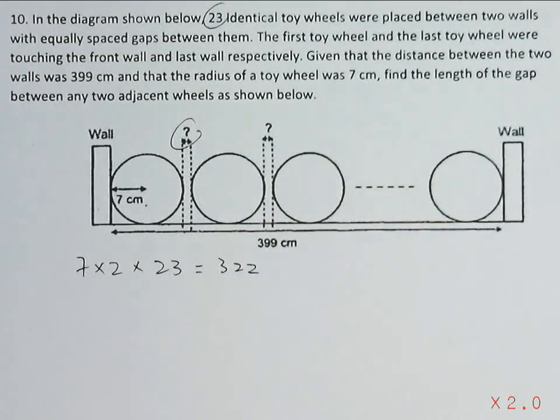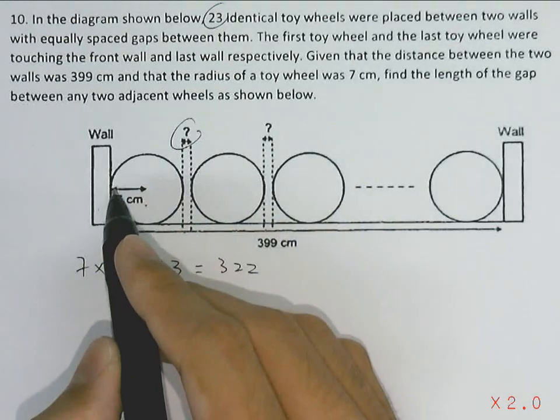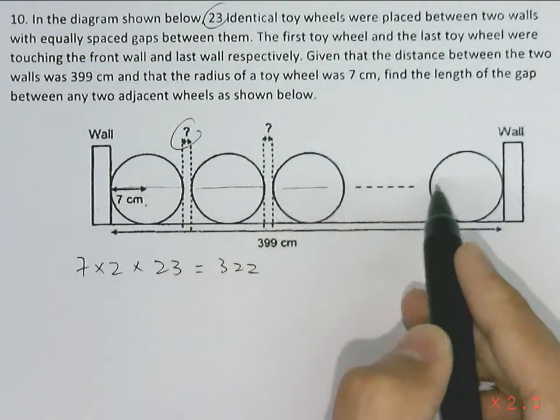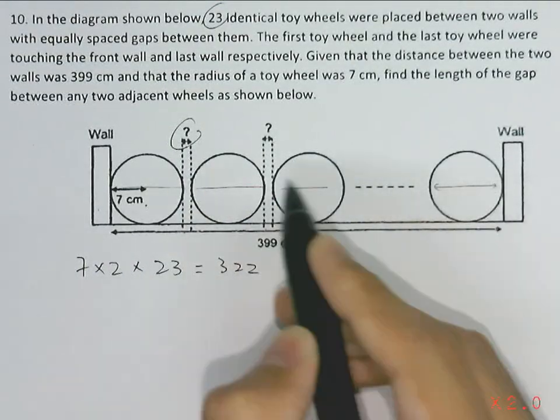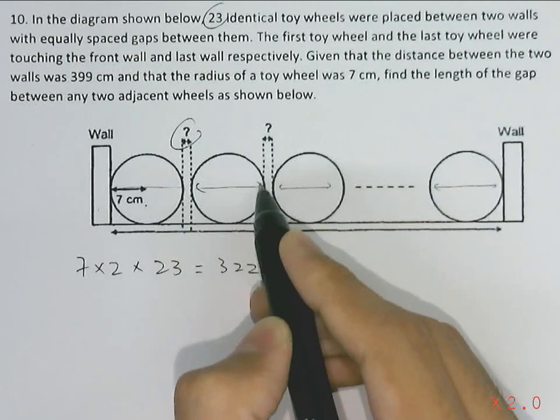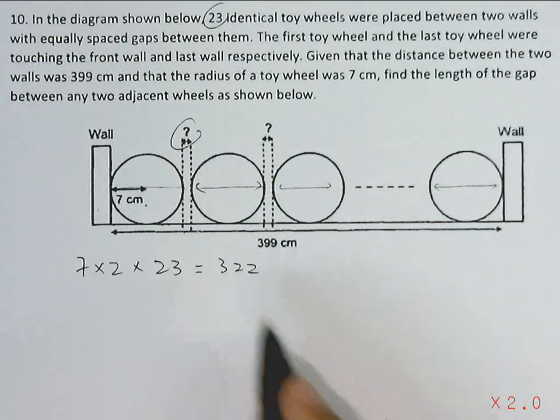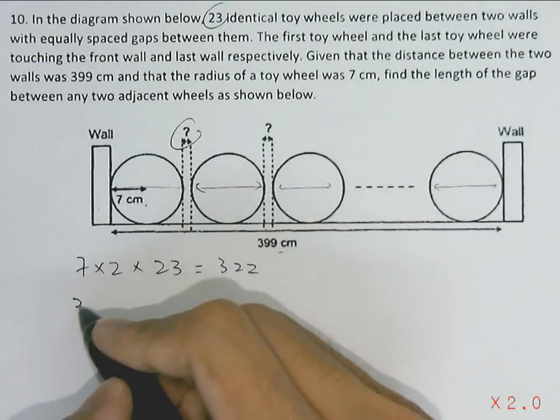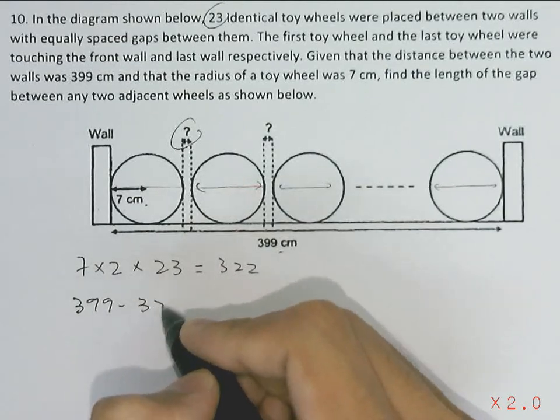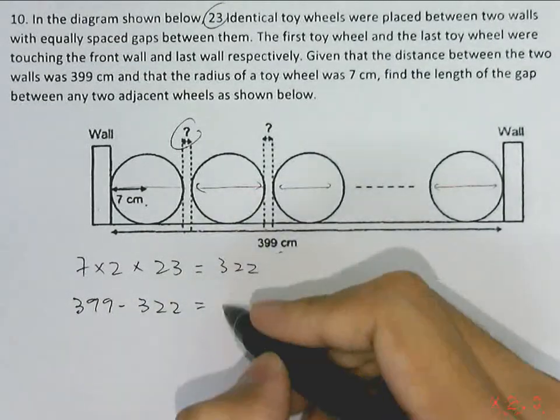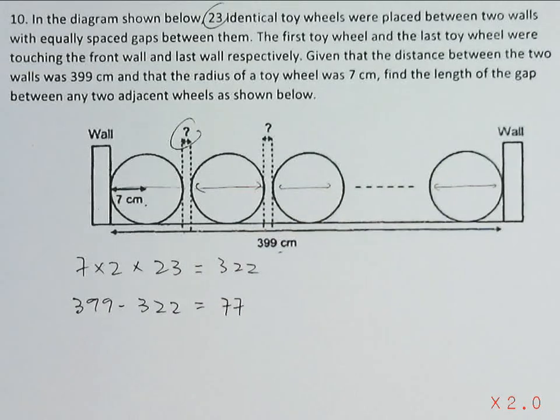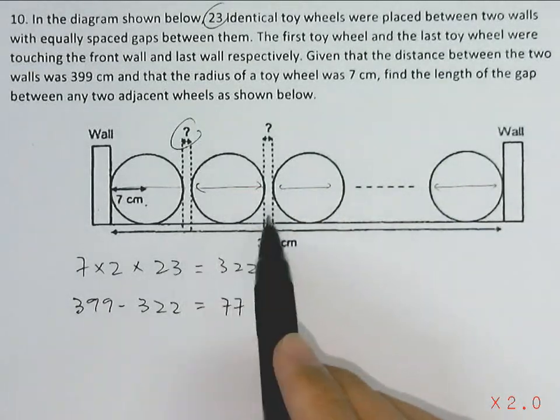Which is 322. So we'll take the full length from wall to wall, 399, subtracting 322, which will give us 77. This is the total distance of all the gaps combined.